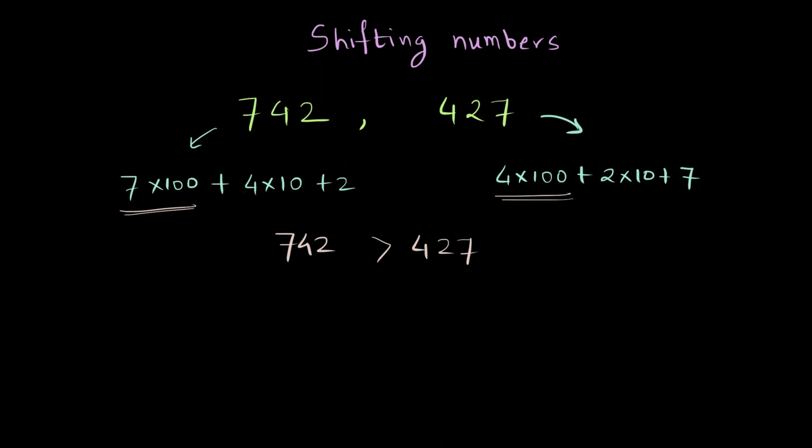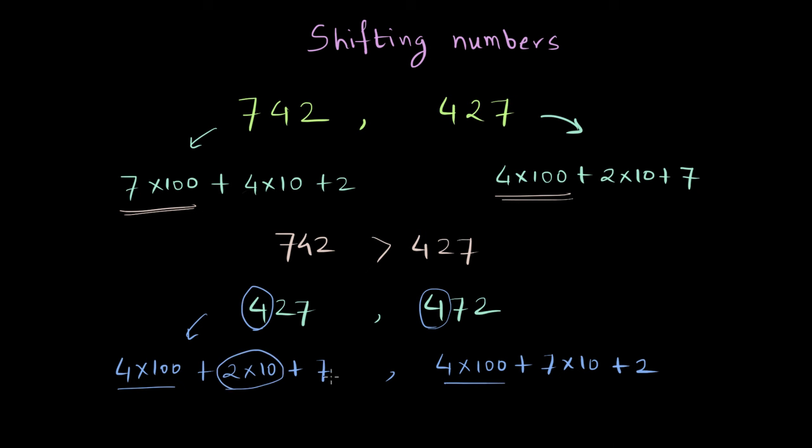But what if we use the same digits but arrange them as 427 and 472? Now both numbers have 4 hundreds. How are we going to find out which number is larger? If we look at the breakdown again, 427 has 4×100, then 2×10 and 7×1. For 472, again we have 4×100, 7×10 and 2. Since both numbers have 4 hundreds, we have to look at tens because tens are greater than ones.